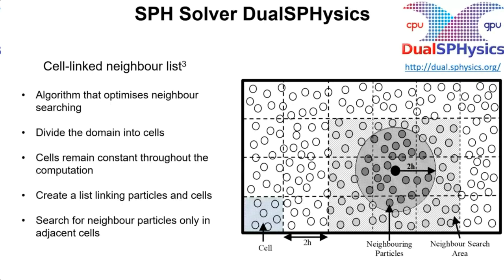The cell-linked neighbor list is an algorithm we use to optimize neighbor searching for particles in SPH. What we do is divide the domain into cells and create a cell-linked list which links the particles with the cells. We can then use that list to search for neighbor particles only in the adjacent cells, which when you have several million particles is a massive time-saver.